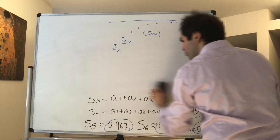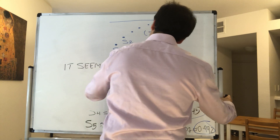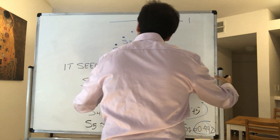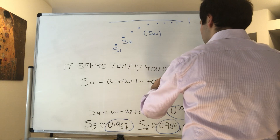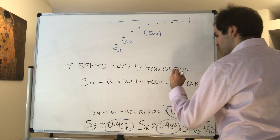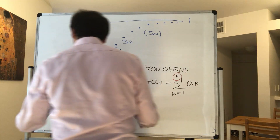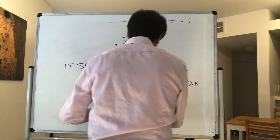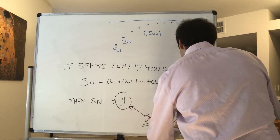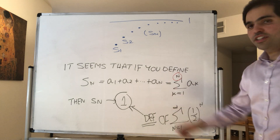To make this fully rigorous: if you define S_N to be A_1 plus A_2 plus dot dot dot plus A_N — the nth partial sum, which you can write as the sum from k equals 1 to N of A_k — then S_N converges to 1. That's the definition of the infinite series. So the sum from n equals 1 to infinity of (1/2)^n is just a limit of partial sums.